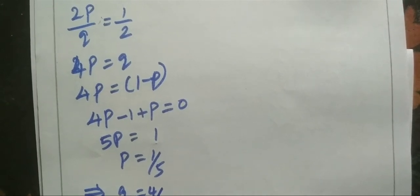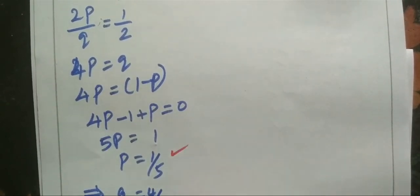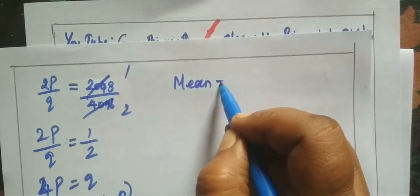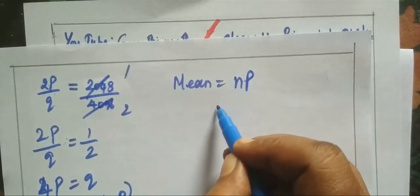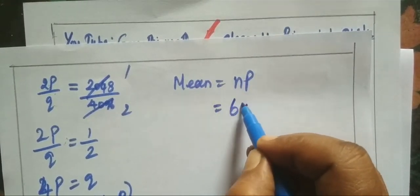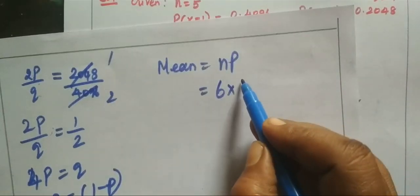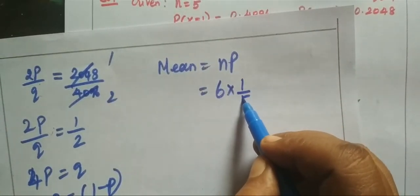So, already we know n value, p value, then q value. Now, what do we do? Mean equals np. n equals 5. Then what is p? p equals 1 by 5.